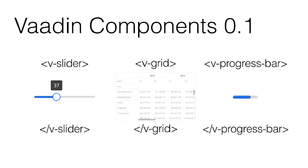We're releasing Vaadin Components version 0.1 now — it's really early stage still. Grid is the centerpiece and highlight. We've also included our slider and progress bar components — more to try how things work together. We decided to take the hardest component we could think of, start from that, then have a couple of extra components to verify we can build a package with multiple components.